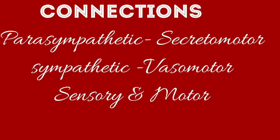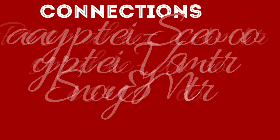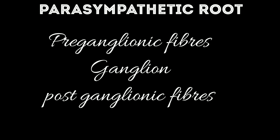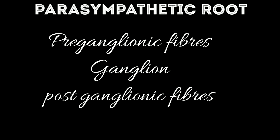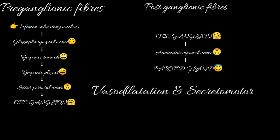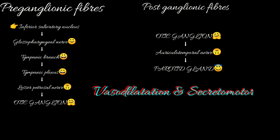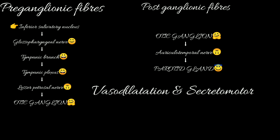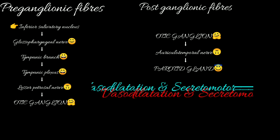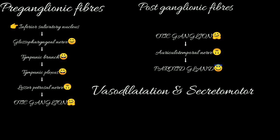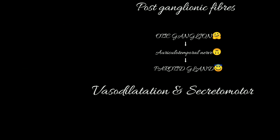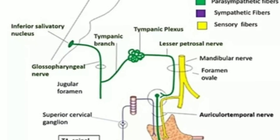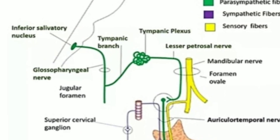Connections are of three types: parasympathetic, sympathetic, sensory, and motor. Parasympathetic connections include preganglionic, ganglionic, and postganglionic fibers. Preganglionic fibers begin from the inferior salivatory nucleus of the glossopharyngeal nerve to reach the ganglion, while postganglionic secretomotor fibers are carried by the auriculotemporal nerve to the parotid gland. The parasympathetic pathway can be seen in this picture.